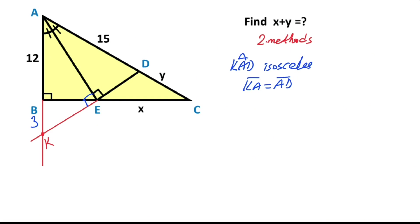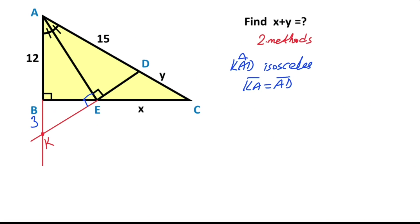We know that this angle is 90 degrees. If you focus on this triangle, let's call here a. If we apply the geometric mean theorem: a squared must equal 12 times 3, that means a equals 6 units.